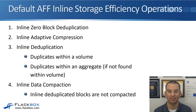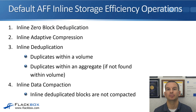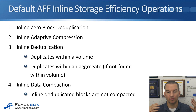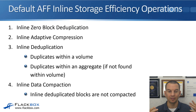Looking at AFF default inline operations: first is inline zero block deduplication — empty blocks will be deduplicated. Next is inline adaptive compression — adaptive compression is better suited for AFF systems and is the default here. Then inline deduplication: first, duplicates within a volume are deduplicated, then duplicates within an aggregate if not found within the volume. Finally, inline data compaction runs, and inline deduplicated blocks are not compacted. Deduplication, compression, and compaction are all enabled inline by default on the AFF, and that is also the order they are processed in.